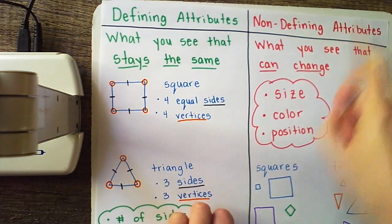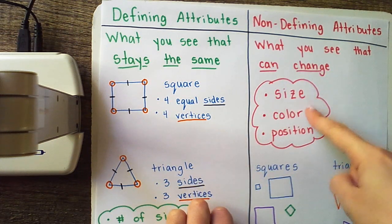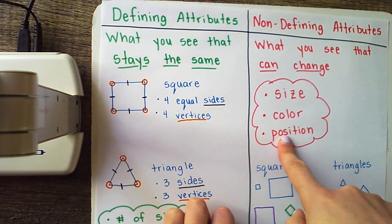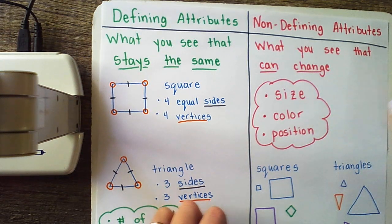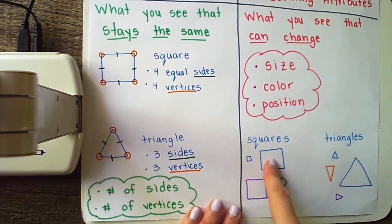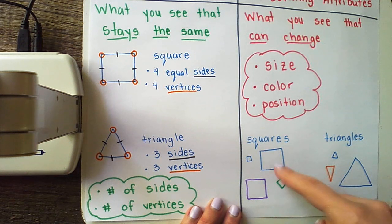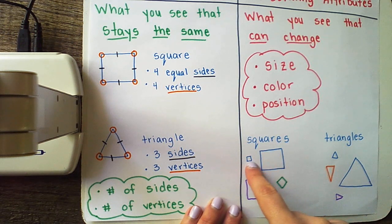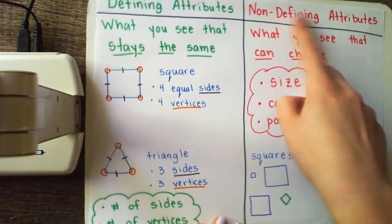Non-defining attributes are things you see that can change. If the size changes, the color changes, or the position or the way that something is located changes, it's not going to change what the shape is. We have a group of squares here. I have two that are blue, one is purple, one is green. I have two that are bigger than the others. Does it matter that this square is much smaller than the one beside it? No! Because size is a non-defining attribute.